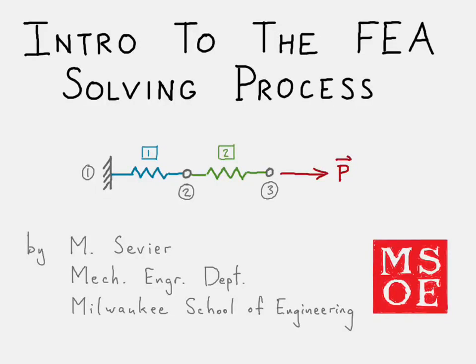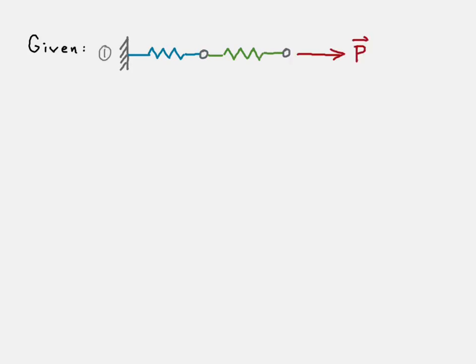This video is an introduction to the finite element analysis solving process by taking a look at a one-dimensional problem: two springs in series, with a force applied to one end and a constraint applied to the other end. There's our problem here — the two springs in series with the force at the end. There are our nodes, our elements, and we know the stiffnesses for each of those elements.